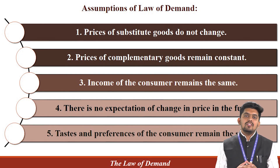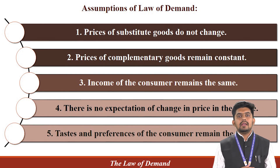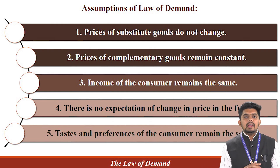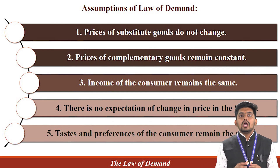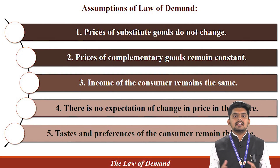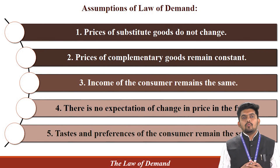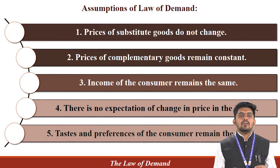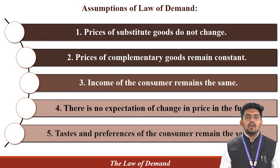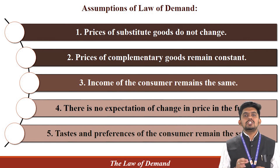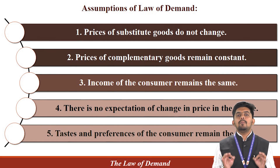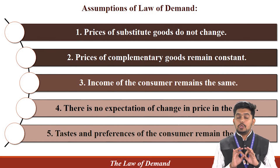The second assumption is that the price of complementary goods remains constant. Complementary goods are goods used together, like car and petrol, or printers and ink cartridges. If the price of a complementary good changes, it can influence demand for the original good. So, to ensure the Law of Demand holds, complementary goods prices must not change.